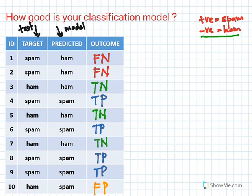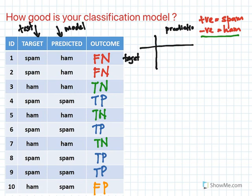Based on this, we can start to build our confusion matrix. The confusion matrix is what you use to measure the effectiveness or performance of your binary classification model. A confusion matrix is a table where you have your target and your prediction.